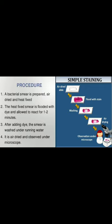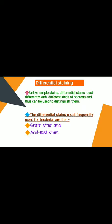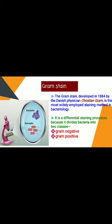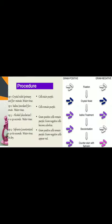Differential staining reacts differently with different kinds of bacteria, allowing them to be distinguished. Differential stains are the most frequently used for bacteria and are categorized into gram stain and acid-fast stain. The gram stain was developed in 1884 by Danish physician Christian Gram and is the most widely employed staining method in bacteriology. It is a differential staining procedure because it divides bacteria into two classes: gram-negative and gram-positive bacteria.